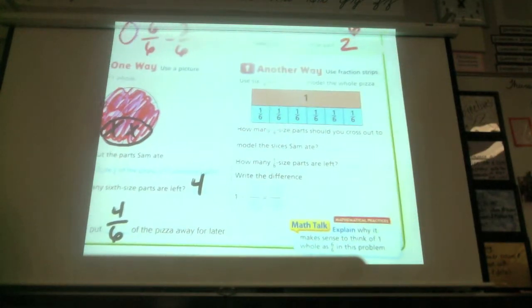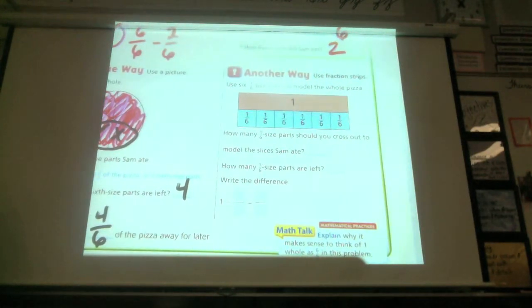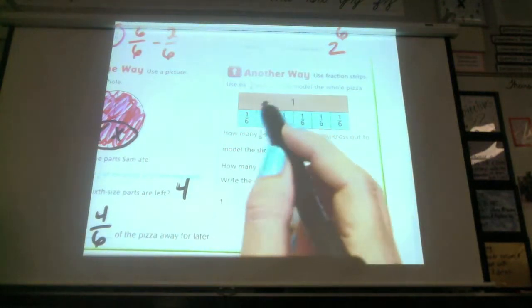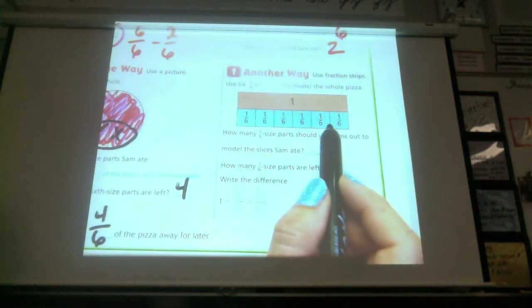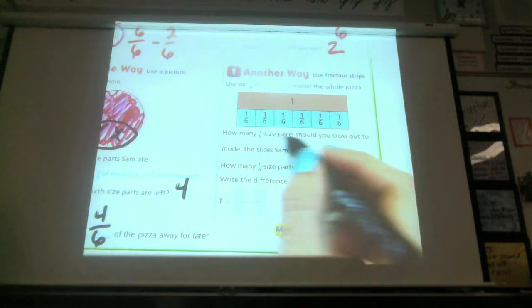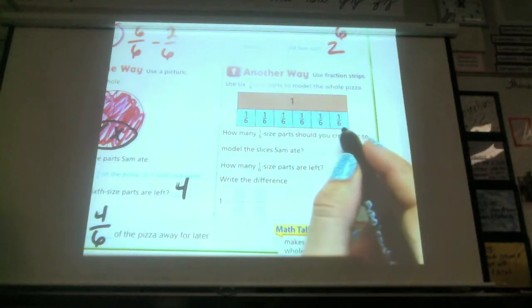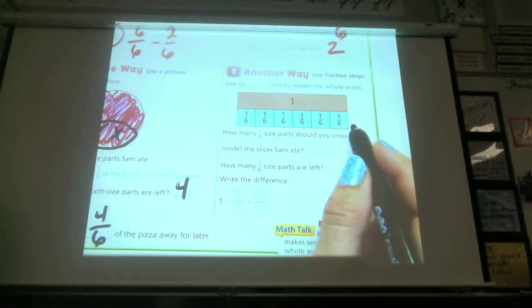No. How about I answer this part down here? So Sam put four-sixths of the pizza away for later. Okay, another way to solve this. We can use the bar model showing the one whole and then splitting that one whole into six. It says how many one-sixth pieces should we cross off? How many do we need to cross off, class? Two. How many did he eat? Two. Two. So we're going to cross off two.